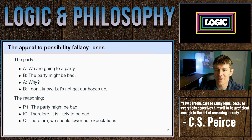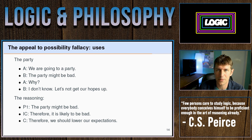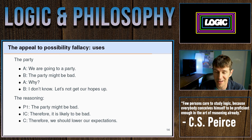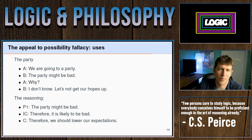Here's an example where someone tries to get you to change your behavior. You say you're going to a party and you're optimistic. A friend says, 'The party might be bad.' You respond, 'Well, it might be bad, but it might be good or neutral — do you know something I don't?' The friend says, 'I don't know, but let's not get our hopes up.' There's a suggestion to change your mindset. The reasoning: the party might be bad, therefore it's likely to be bad, and if it's likely to be bad, we should lower our expectations. But this commits the appeal to possibility fallacy.